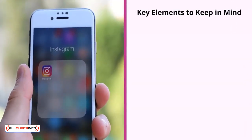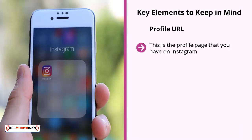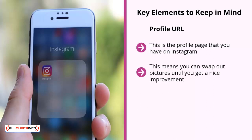Here are the key elements to keep in mind when optimizing. First: Profile URL. This is the profile page that you have on Instagram. You can change the picture and you can change the description, but just make sure that when you make changes, you go element by element. This means you can swap out pictures until you get a nice improvement. Once the improvement is sustainable, you then change the text — see if it improves your click-through rate. Once you are able to do that, then you can change the landing page URL.